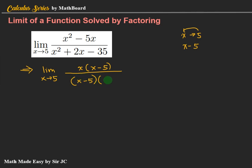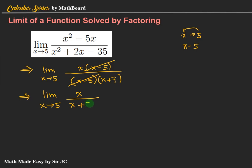In the denominator, we find the other factor by dividing: x squared divided by x is x, and negative 35 divided by negative 5 is positive 7. So the factored form is x minus 5 times x plus 7. When you check: x times x is x squared, 7x minus 5x is 2x, and negative 5 times 7 is negative 35 — correct. We cancel x minus 5, leaving x over x plus 7. Substituting x equals 5: 5 divided by 5 plus 7 equals 5 over 12. So the limit is 5/12.